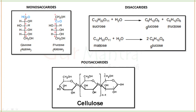Glucose is basically a 6-carbon molecule. It can be a ring or a linear form — here it is shown in linear form. Fructose is also 6-carbon. In glucose, the first carbon is the aldehyde group, and in fructose, the second carbon is the ketone group. This is a monosaccharide.